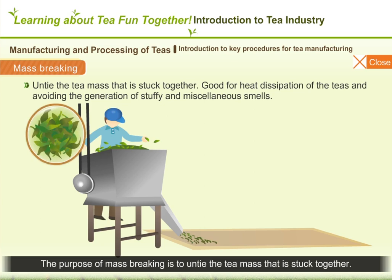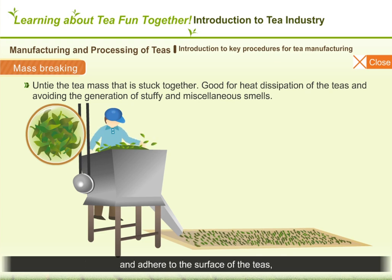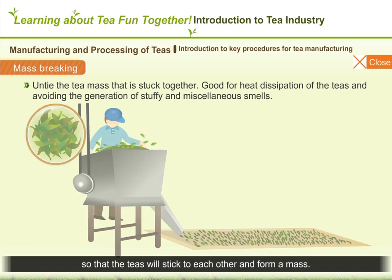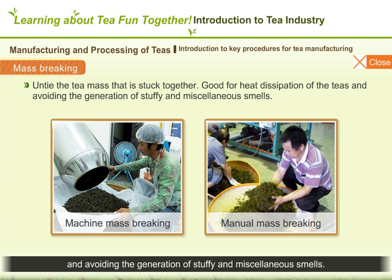The purpose of mass breaking is to untie the tea mass that is stuck together. Because in the process of rolling, the tea juice oozes and adheres to the surface of the tea, causing the teas to stick to each other and form a mass. Therefore, the tea should be spread out by mass breaking, which is good for heat dissipation of the teas and avoids the generation of stuffy and miscellaneous smells.